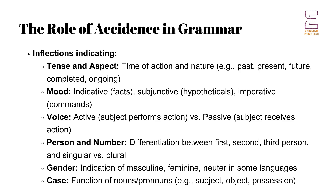Voice. Changes in form can indicate active or passive voice, showing whether the subject is performing or receiving the action. Person and Number. Inflections can differentiate between first, second, and third person as well as singular and plural forms. Gender. In some languages, words inflect to indicate masculine, feminine, or neuter gender. Case. Inflections show the grammatical case, indicating the function of a noun or pronoun in a sentence — for example, subject, object, or possession.